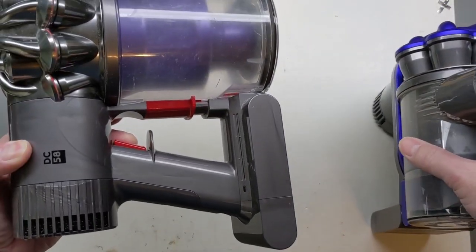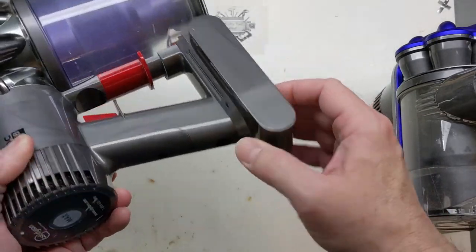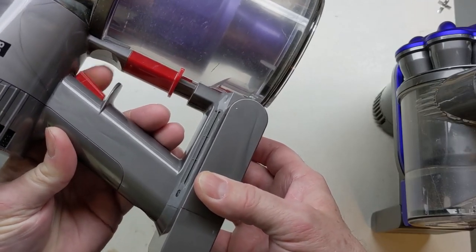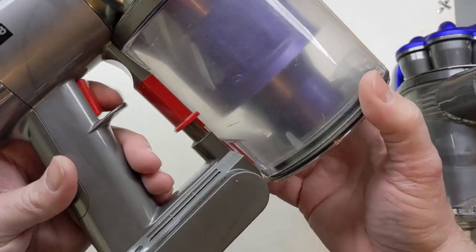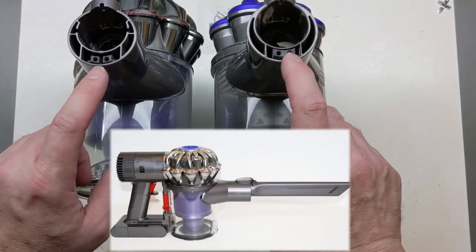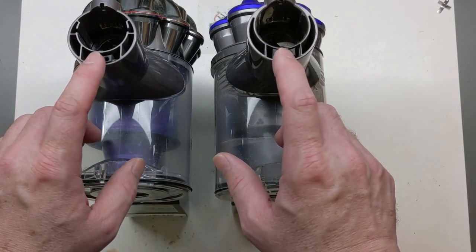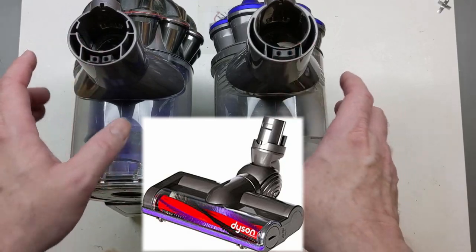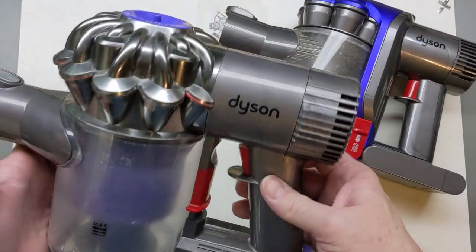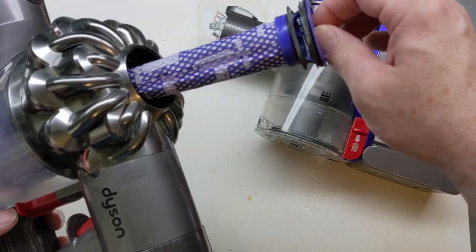We do notice some differences on the DC58. One of the differences is the battery does not easily come out. The trigger feels really different. Even though attachments seem to work interchangeably, we notice that our connectors will not allow for our powered attachments to be run from one to the other. The filter is different on this one as compared to the DC35 filter, but still a lot of similarities.